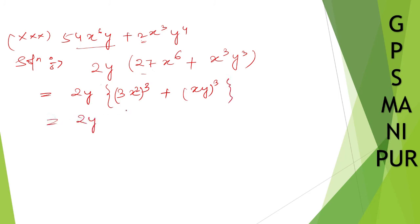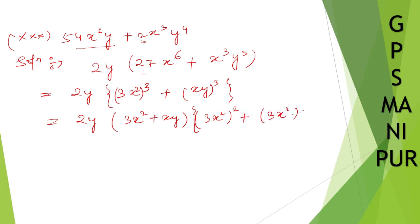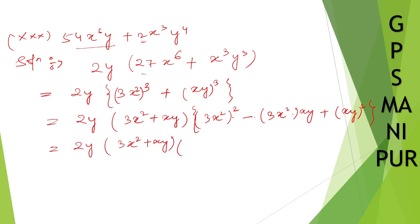Applying A cubed plus B cubed with A equals 3x squared and B equals xy: 2Y times (3x² plus xy) times (A squared minus AB plus B squared), which gives 2Y times (3x² + xy) times (9x⁴ minus 3x³y plus x²y²).